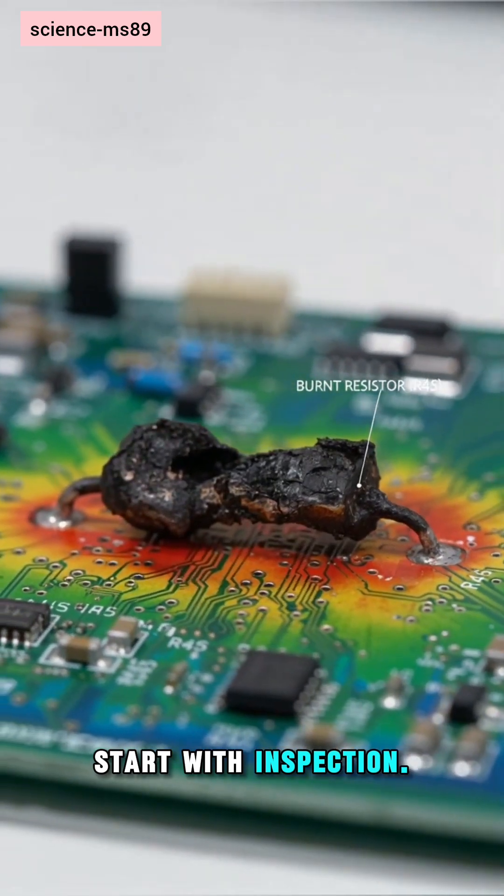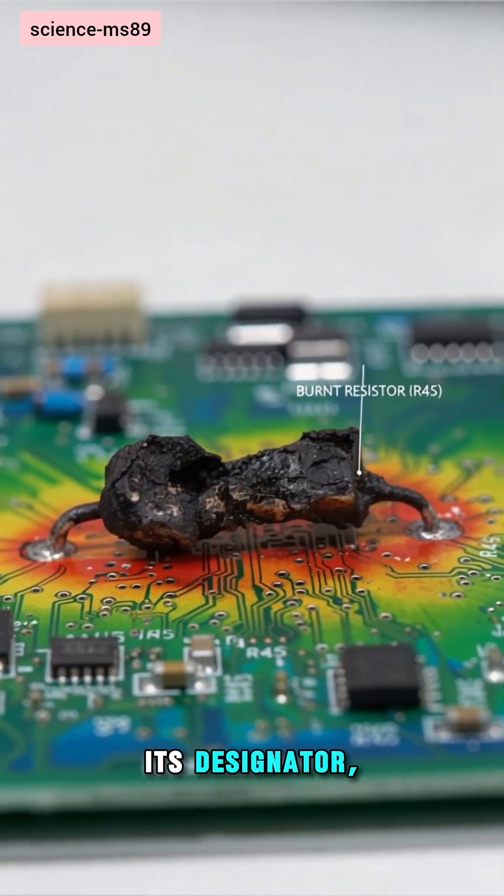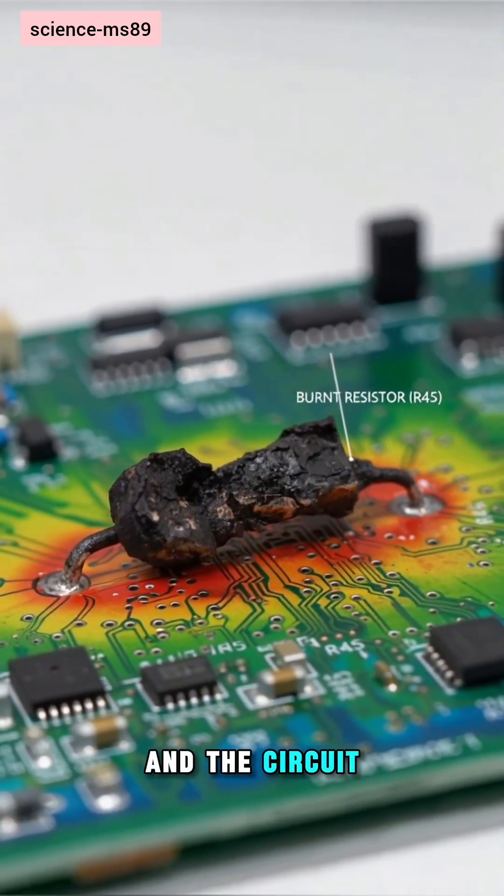Start with inspection. Note its designator, nearby parts, and the circuit section it belongs to.